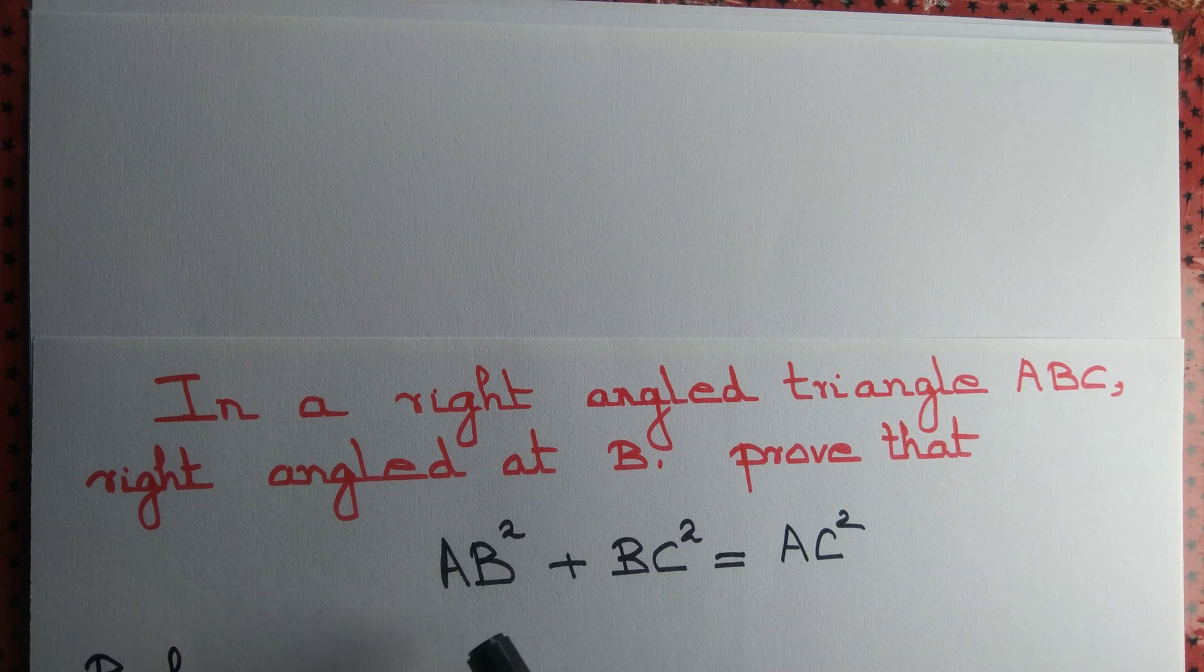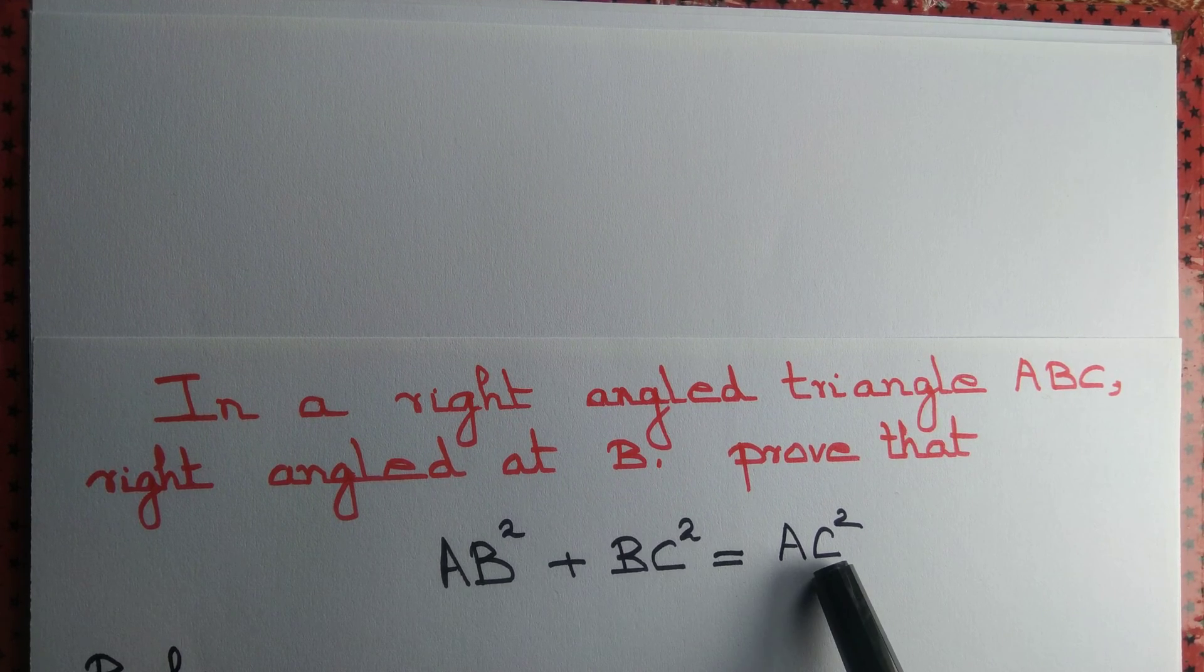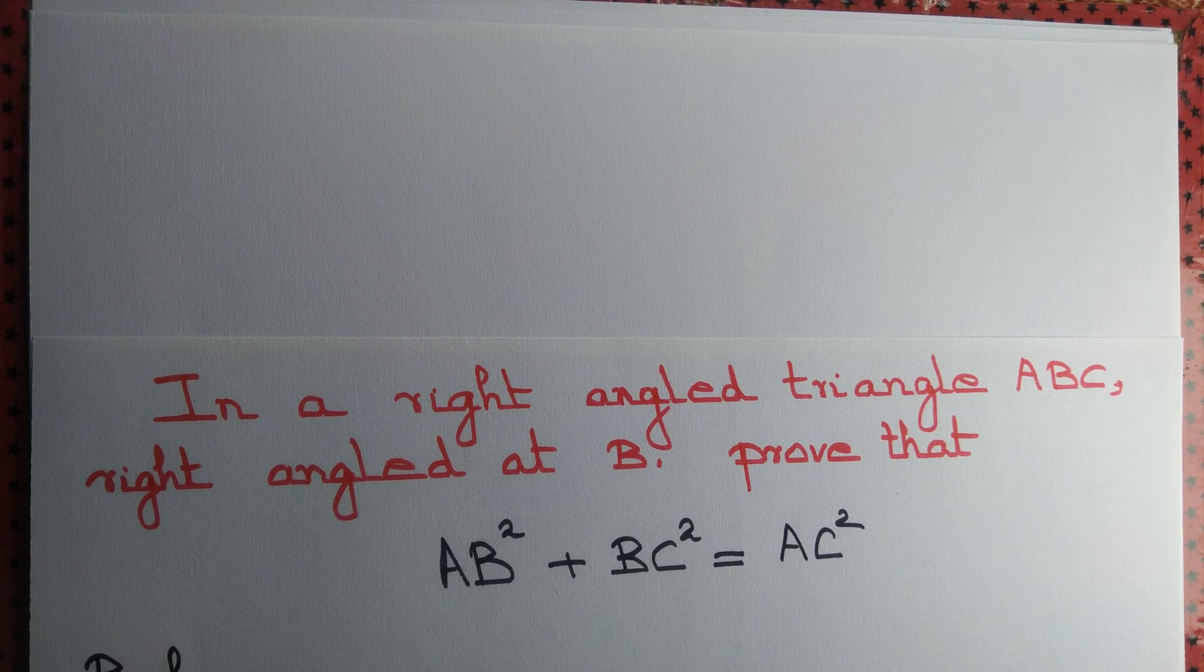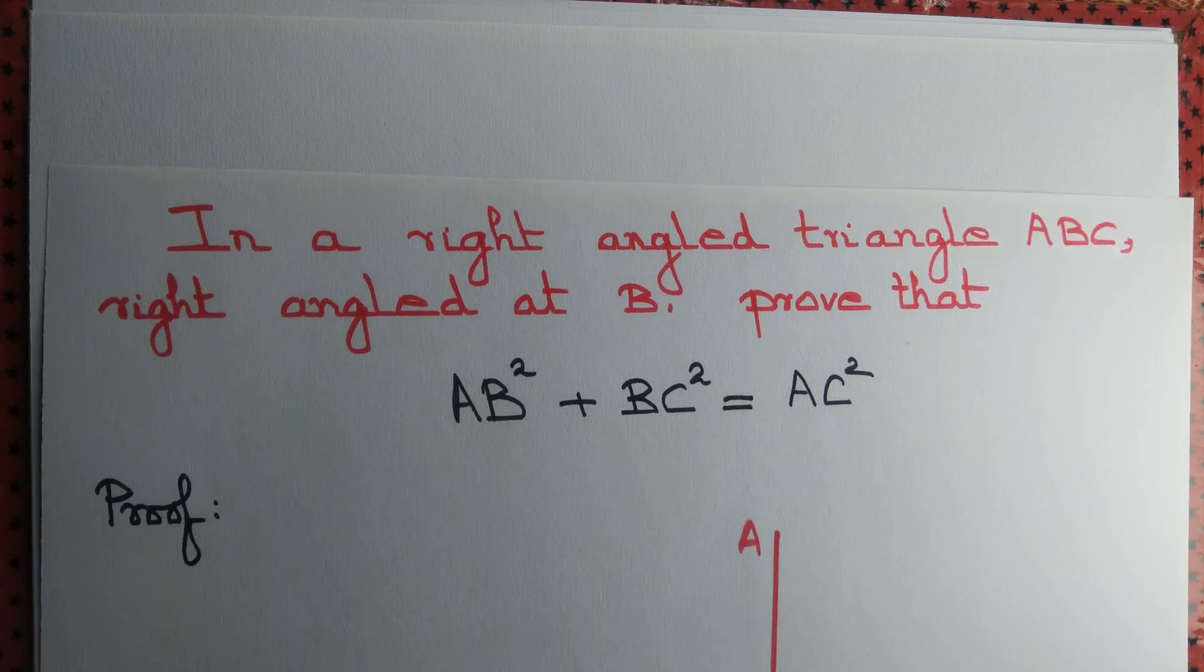Prove the identity AB square plus BC square equal to AC square in a right angle triangle ABC, right angled at B. Let us draw right angle triangle ABC.